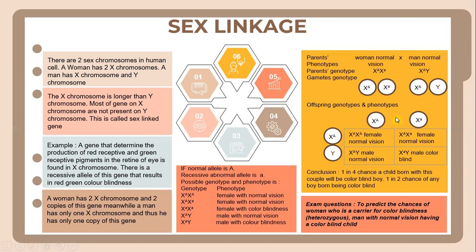When X^A combines with X^A, the offspring is a baby girl with normal vision. When X^a combines with X^A, there is also a baby girl with normal vision. X^A combined with Y produces a baby boy with normal vision, and X^a combined with Y produces a baby boy with colorblindness. As a conclusion from this genetic diagram, there is a one in four chance that a child born to this couple will be a colorblind boy, and a one in two chance that any boy born will be colorblind.